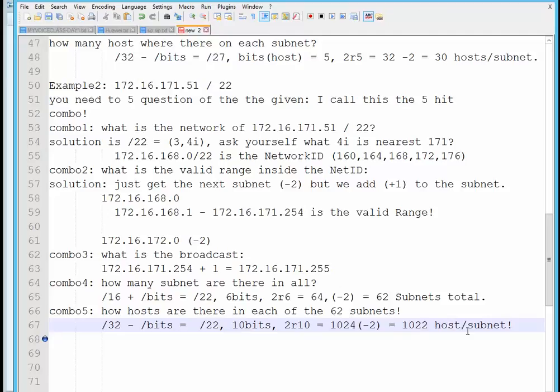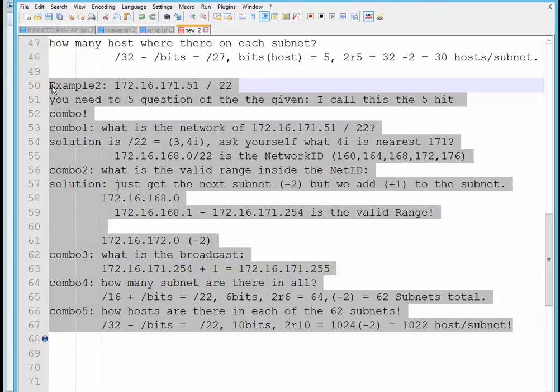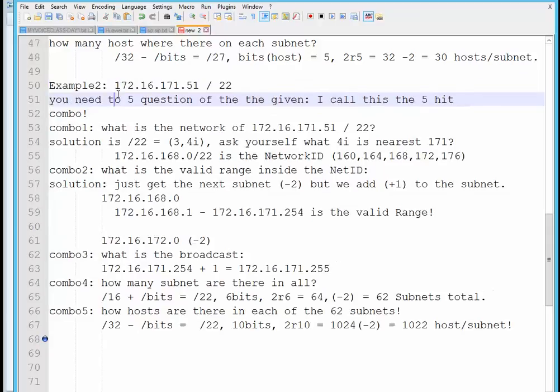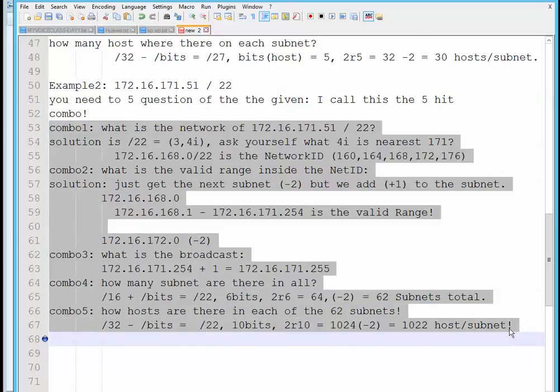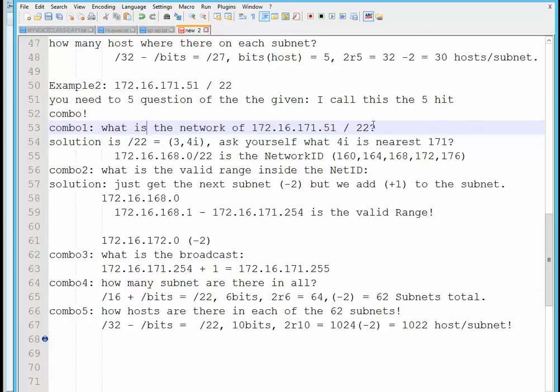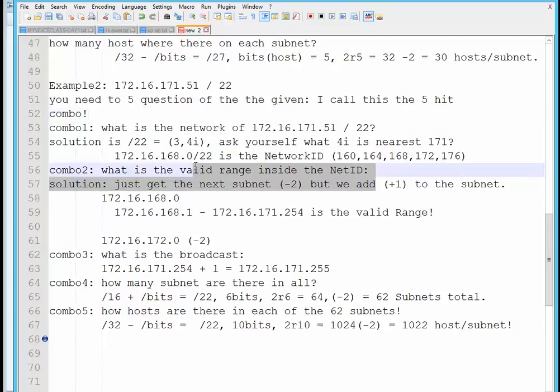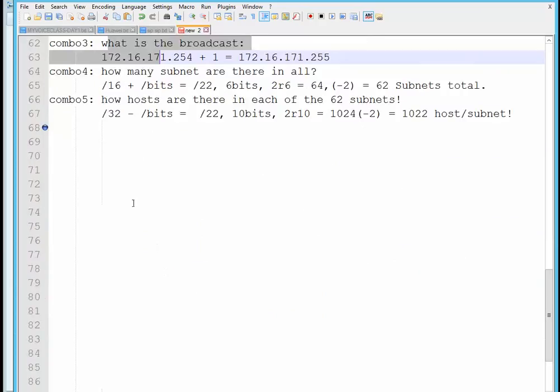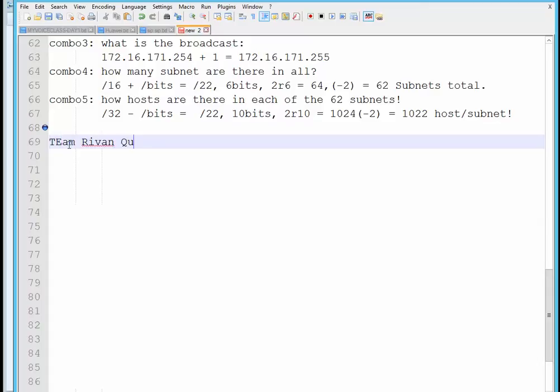So this is the kind of questions you would expect from the CCNA exam. So whenever a given question is asked, be sure that you are able to get all five combinations from finding the network ID, getting the valid range, the broadcast. To better prepare you for such questions, please answer this in your sheet of paper. So these are the right theme ribbon questions to solve.